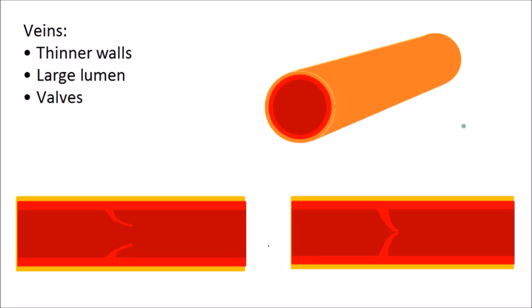Therefore, the veins don't need a muscular thick wall. Their walls are thinner, as you can see on this diagram, and they have a large lumen to allow blood to flow through them at a constant rate. Because blood is flowing at a lower pressure, veins need to have valves to prevent backflow of blood as it moves towards the heart.